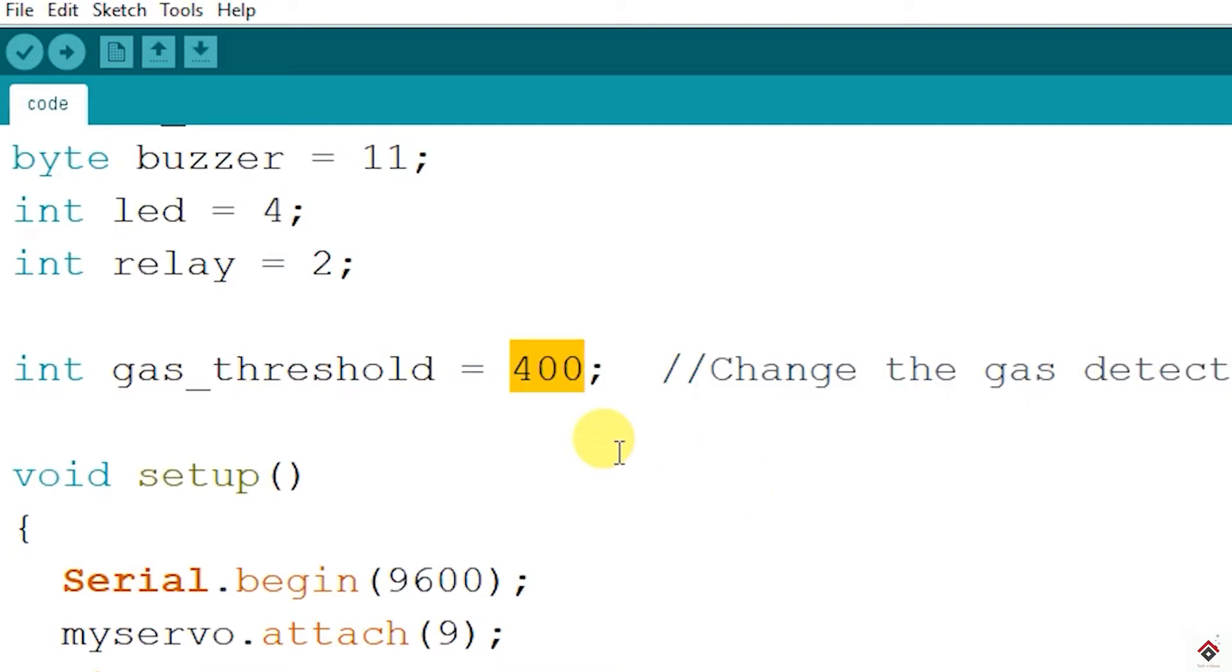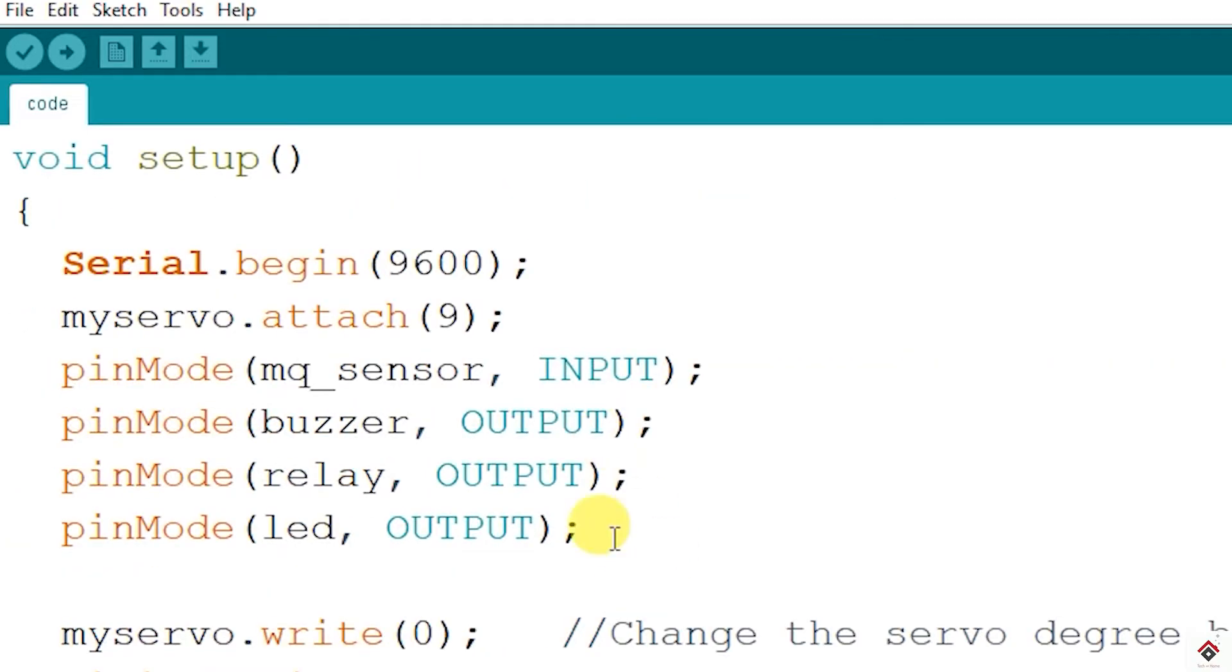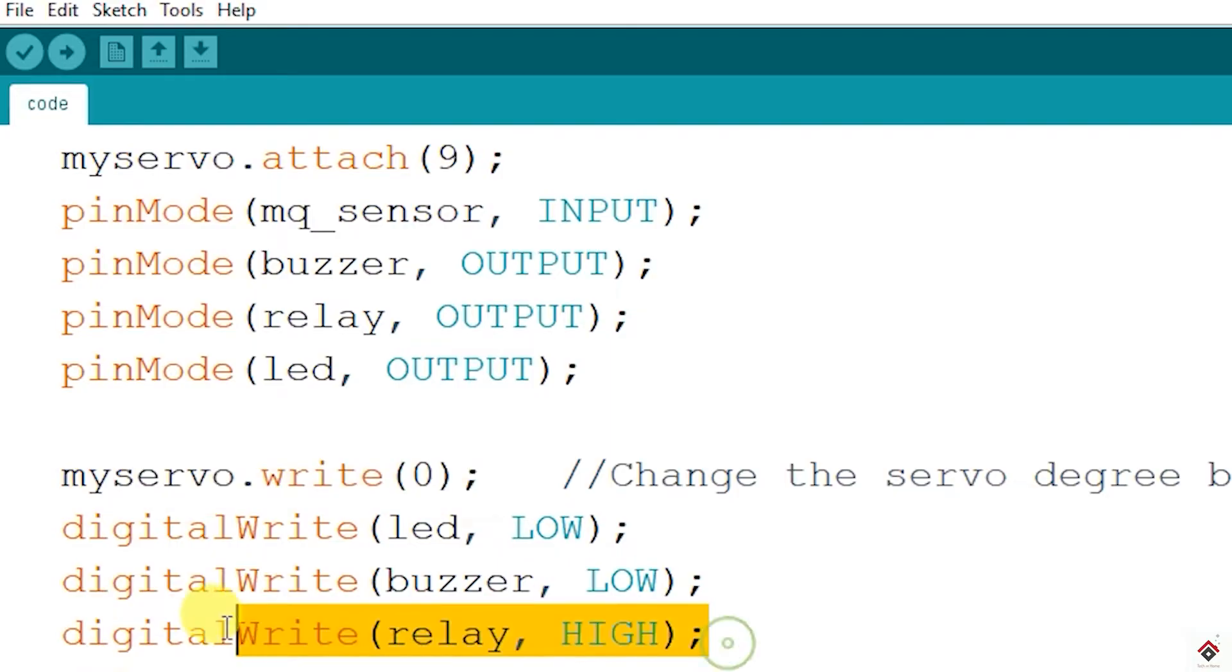Next, in the setup function we are setting the modes of all the components. The sensor to input, and relay, buzzer, and LED as output devices. Also, I am setting the default state of all the components. Servo by default will be in zero degree. LED, buzzer, and relay will be in off state.